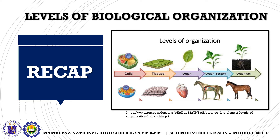We all know that all living things, and that includes us human beings, we are composed of cells. A cell is a basic unit of life. And if you can still recall in grade seven, we have two types of cells: plant cells and animal cells.